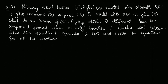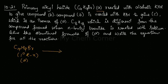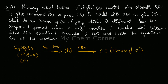The next problem is question 10.21. A primary alkyl halide with the formula C4H9Br is given the name compound A. This compound is treated with alcoholic KOH to give compound B. Compound B is then treated with HBr to give compound C. Compound C is an isomer of A.